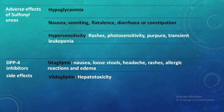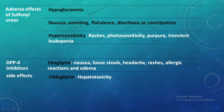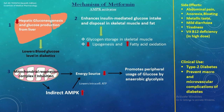Adverse effects of sulfonylureas include hypoglycemia, nausea, vomiting, flatulence, diarrhea or constipation, and hypersensitivity reactions such as rashes, photosensitivity, purpura, and transient leukopenia. For DPP-4 inhibitors, sitagliptin causes loose stools, headache, skin rash, allergic reactions, and edema, while vildagliptin is associated with hepatotoxicity.